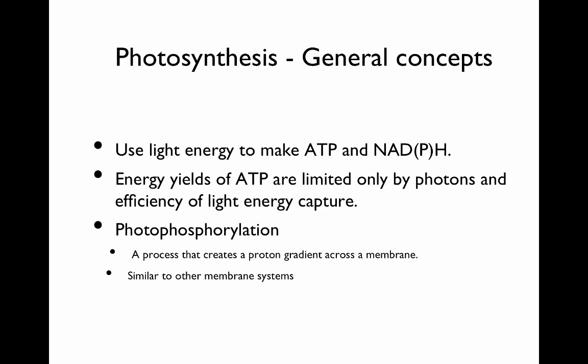Photosynthesis uses light energy to make ATP and NADH, as opposed to chemicals. The energy yields of ATP are limited only by the photons and efficiency of light capture. The process that creates this ATP is called photophosphorylation. It creates a proton gradient across the membrane, and that gradient is dissipated by ATP synthase. It's very similar to other membrane systems.